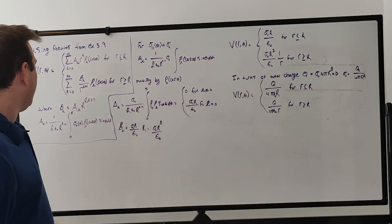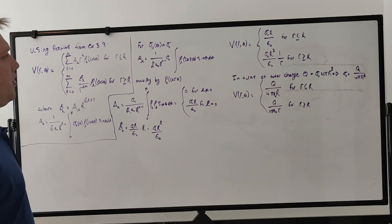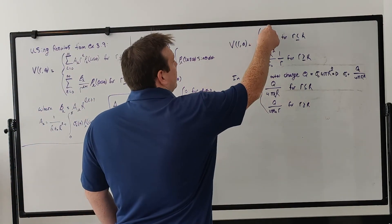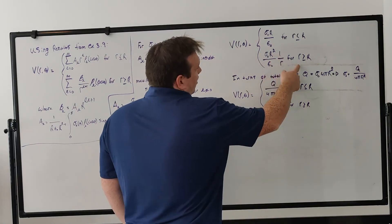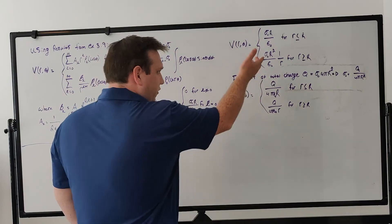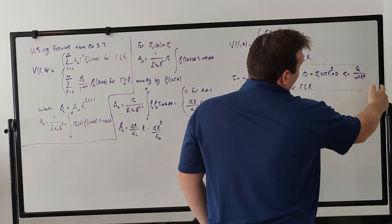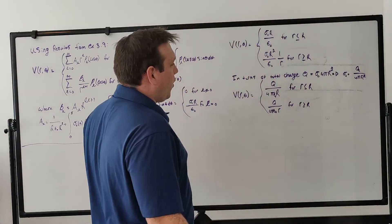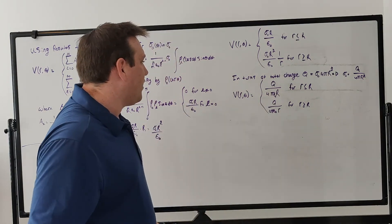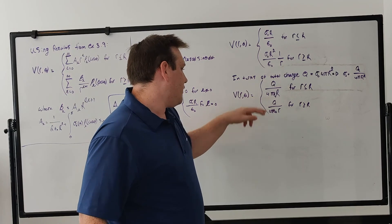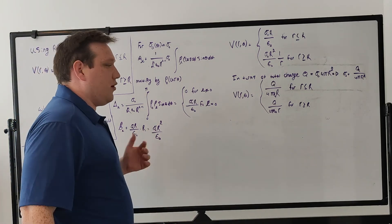With these coefficients, we get rid of the summations since only a single term survives. The potential for R less than the radius is sigma-naught times radius over epsilon-naught, which is constant. For outside the sphere, it's sigma-naught R-squared over epsilon-naught times 1/R, falling off like 1/R. Writing this in terms of total charge Q — where sigma-naught equals Q over 4-pi R-squared — the inside potential becomes Q over (4-pi epsilon-naught times radius), and outside it's Q over (4-pi epsilon-naught times r), a result we already knew, which helps verify Laplace's equation solution process.